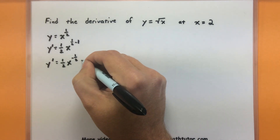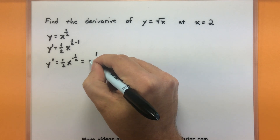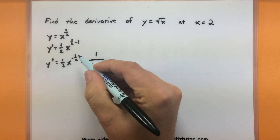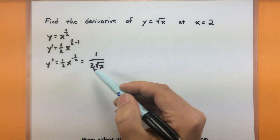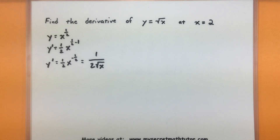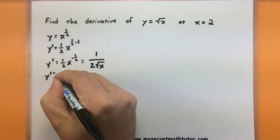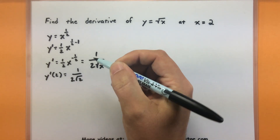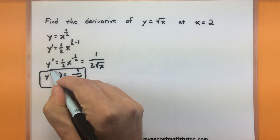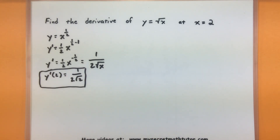A better way to write that back in terms of square roots: one over two times the square root of x, since the negative one-half puts the square root in the denominator. So there's the derivative of the original function. If I evaluate this at x equals 2, I get one divided by two times the square root of two. That is the derivative I'm after using the power rule.